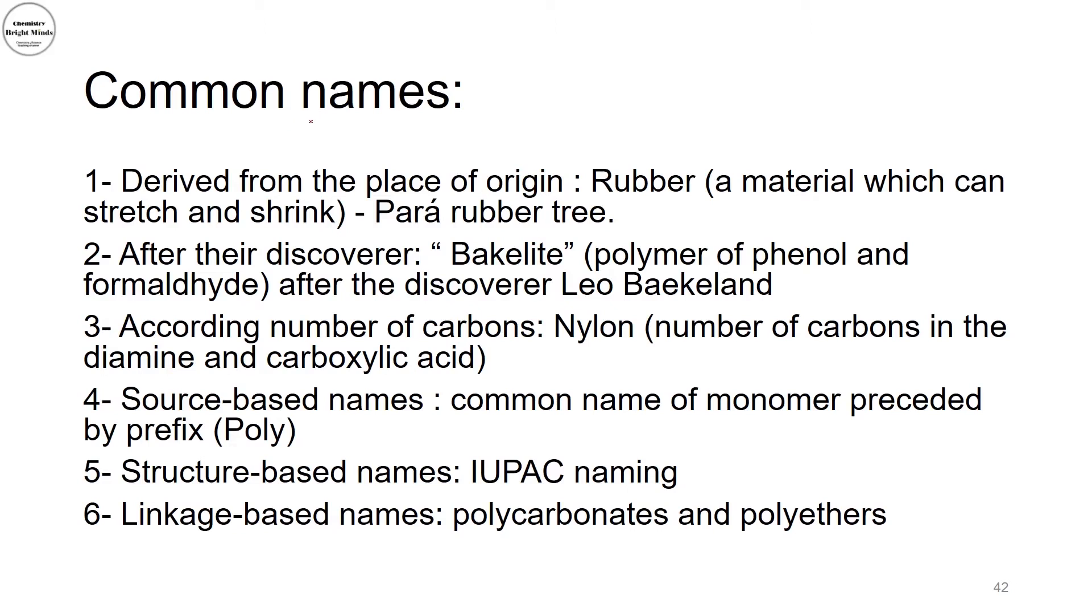We can name polymers derived from the place of origin that my polymer was derived from, such as rubber. Rubber is actually named after the para rubber tree, which is the source or the natural source of rubber.